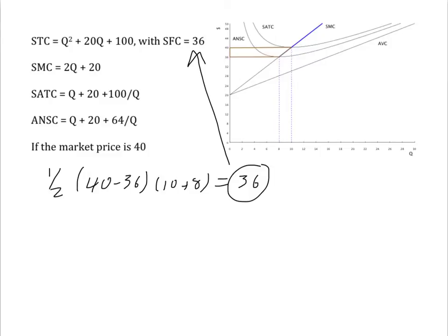So, again, in the short run producer surplus equals sunk fixed cost plus any economic profit. Here, those economic profits are zero.